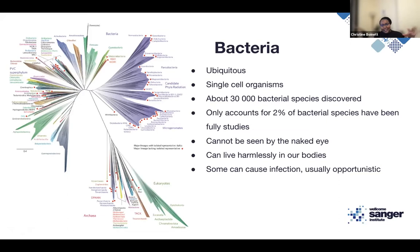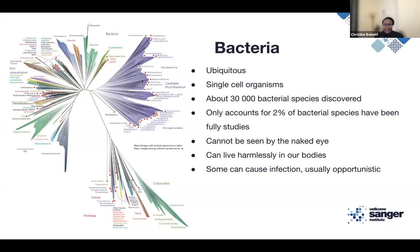I've shown a phylogenetic tree here. In evolutionary genetics, a phylogenetic tree shows the relationships between bacteria — similar to a family tree showing relationships between parents, siblings, and cousins. All of these at the top are bacteria; at the bottom are archaea and eukaryotes. This is just to show you the diversity of bacteria. There are over 30,000 that have been studied in detail, but that only accounts for 2% of all known bacterial species.